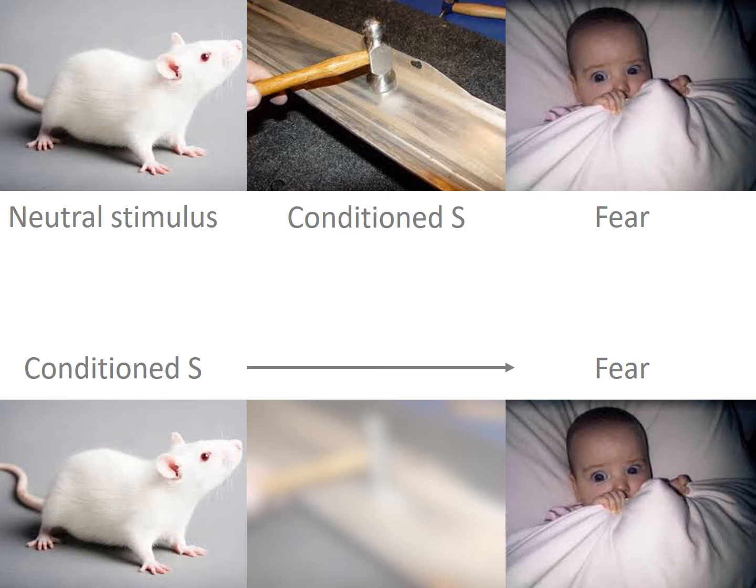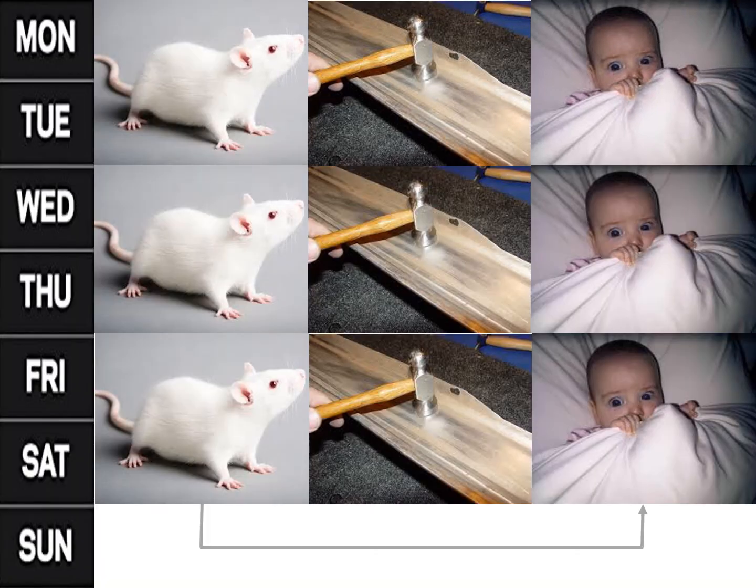First, according to the principles of classical conditioning, objects need to precede some aversive stimulus several times—perhaps between five and fifteen times—before individuals will fear this object. Little Albert, for example, had to observe the white rat and then hear the unpleasant noise several times before developing the fear.